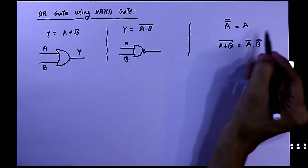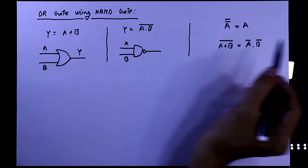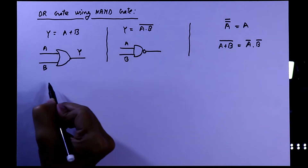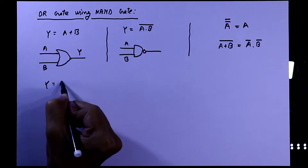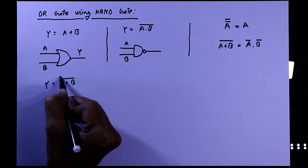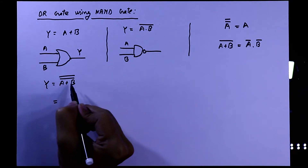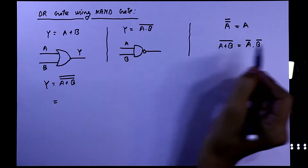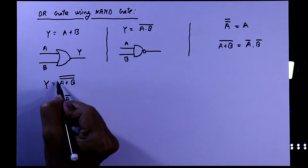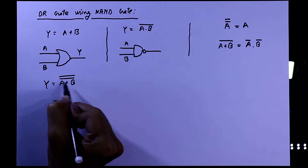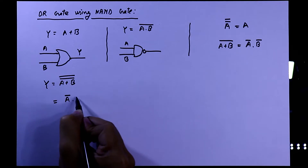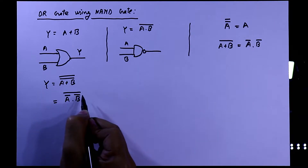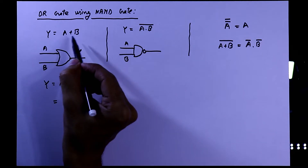We'll use this property to design an OR gate using NAND gate. So using this property we can write y = (a + b)̄̄, which means y = a + b. And using this property we can write (a + b)̄ as ā·b̄, with the whole complement over it. So again this means y = a + b.